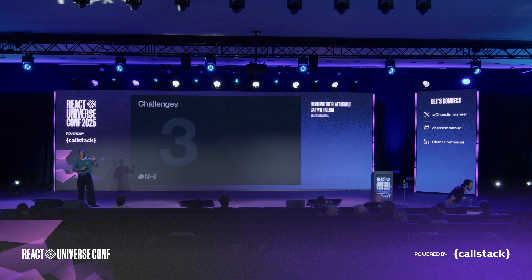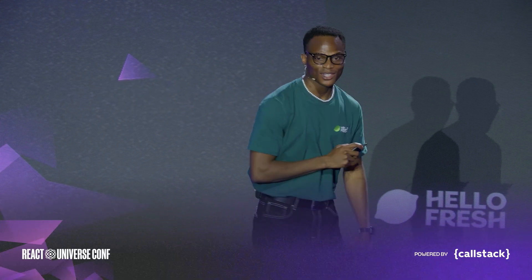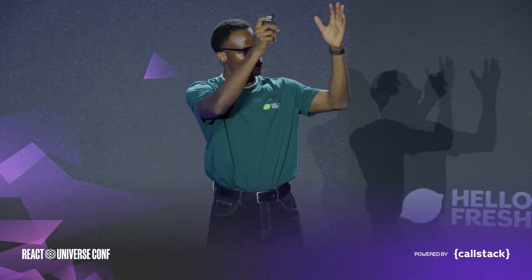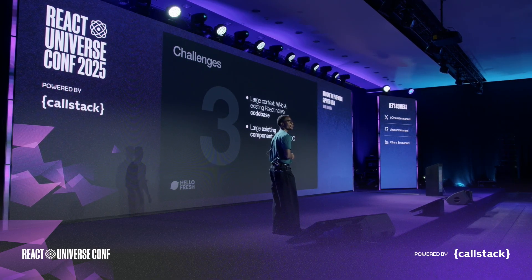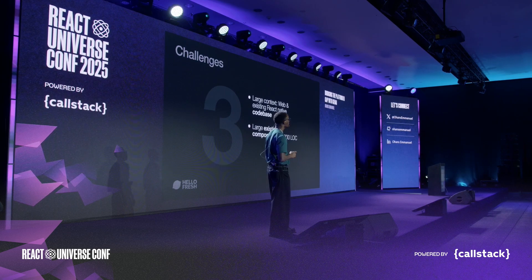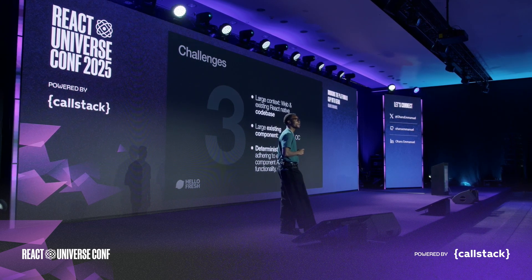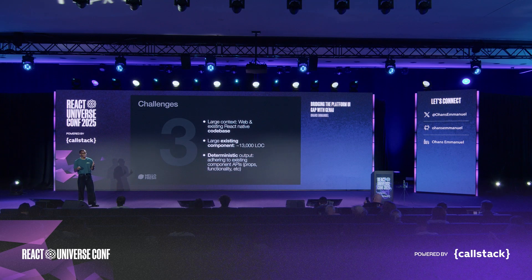I'm going to highlight the three main problems, then work through each one and how we approached them. Hopefully you'll pick up one or two tips to apply to your own project and reduce the frustration of working with these agents. The first problem is large context — we're working with two different codebases, the web and React Native repositories. The second problem was that the component itself was huge. The third, and I think most interesting, is we wanted deterministic outputs. We're not trying to get creative — we already had existing APIs and existing behavior, and it was important to match them one-to-one.